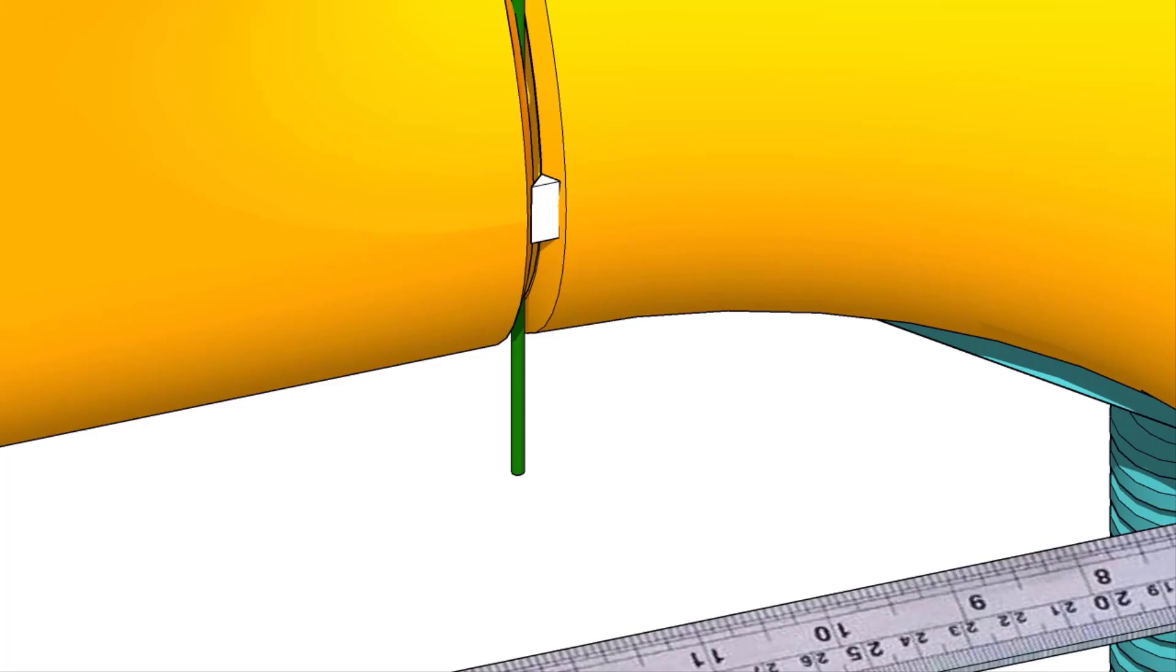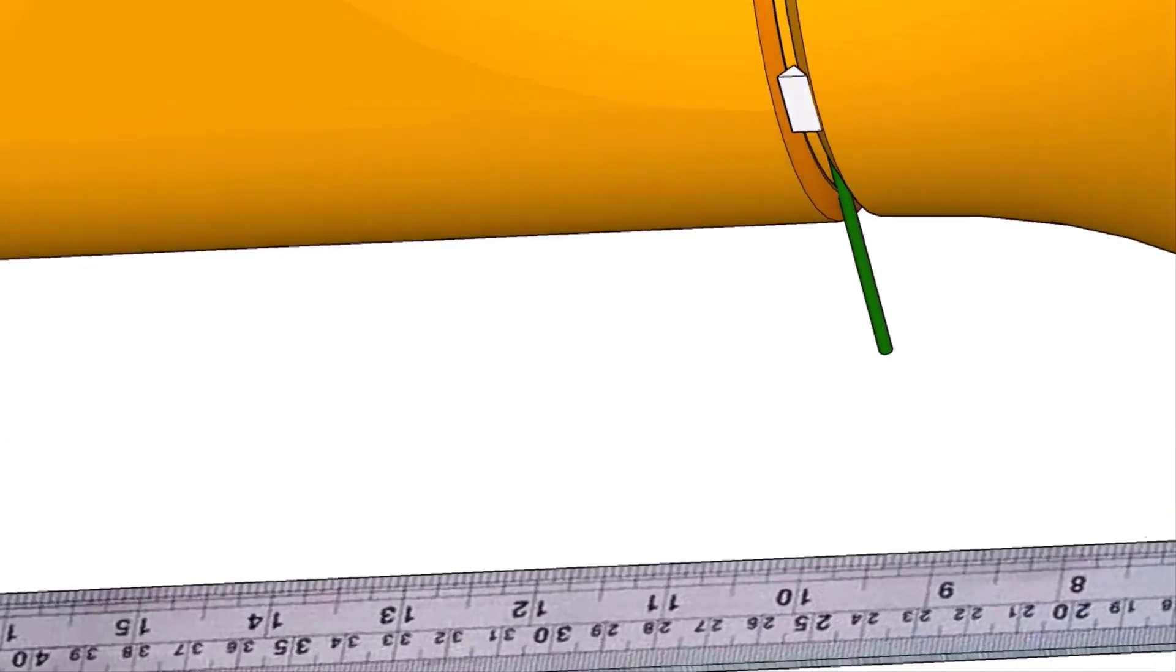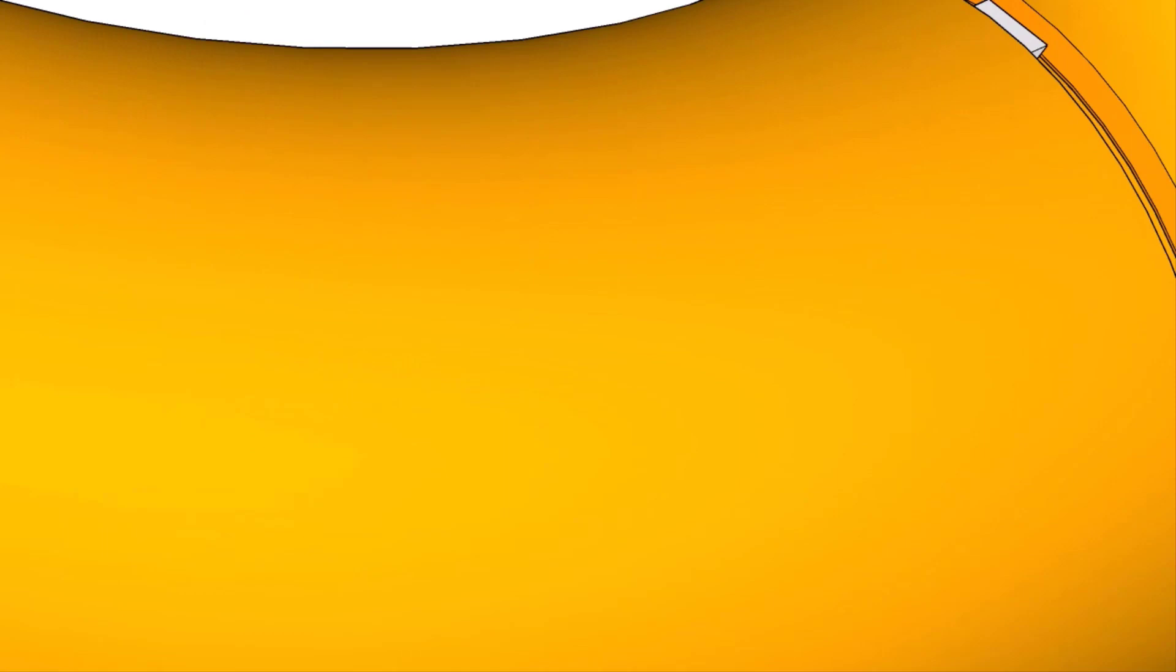Tack weld on both sides of the elbow. Remove the gap rod.